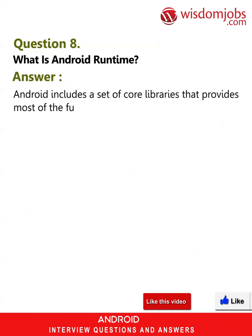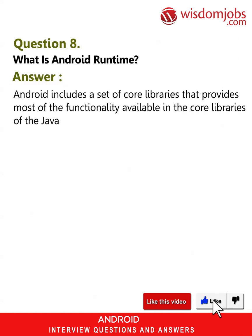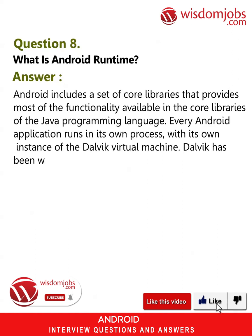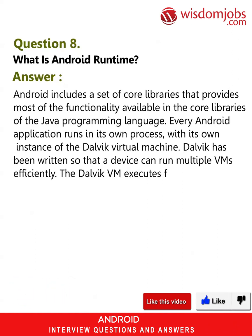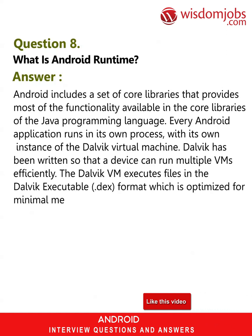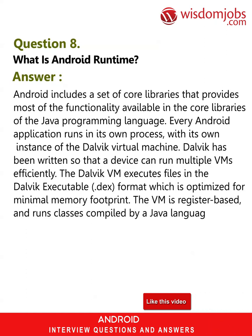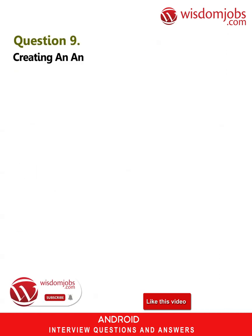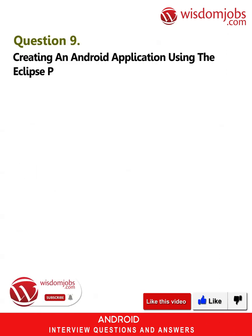Question 8: What is Android Runtime? Answer: Android includes a set of core libraries that provides most of the functionality available in the core libraries of the Java programming language. Every Android application runs in its own process with its own instance of the Dalvik virtual machine. Dalvik has been written so that a device can run multiple VMs efficiently. The Dalvik VM executes files in the Dalvik executable .dex format, optimized for minimal memory footprint. The VM is register-based and runs classes compiled by a Java compiler transformed into the dex format by the DX tool.